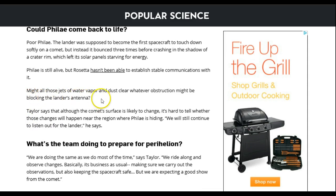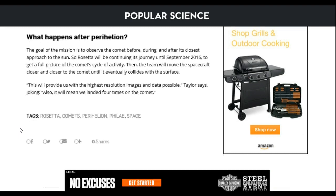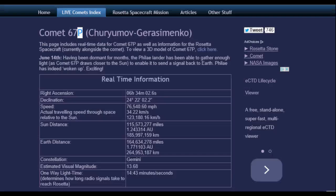Might all those jets of water vapor and dust clear whatever obstruction might be blocking the lander's antenna? Taylor says that although the comet surface is likely to change, it's hard to tell whether those changes will happen near the region where Filet is hiding. They couldn't keep established communication as far as visual with this comet. But today it's passing the closest approach to the Sun.